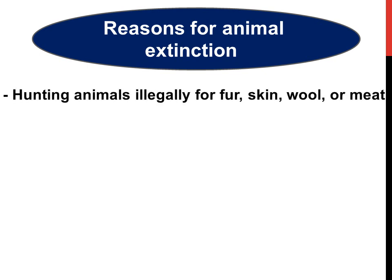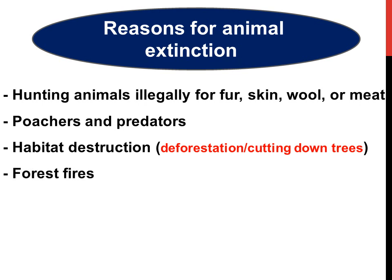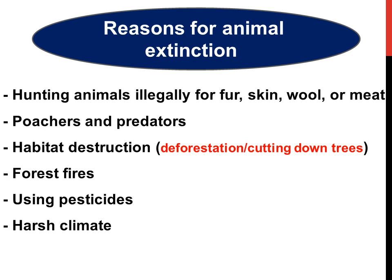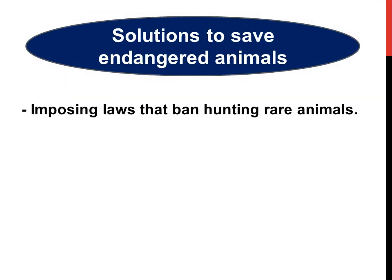Reasons for animal extinction: hunting animals illegally for fur, skin, wool, or meat — poachers and predators. Habitat destruction or deforestation — cutting down trees, forest fires, using pesticides, and harsh climate.